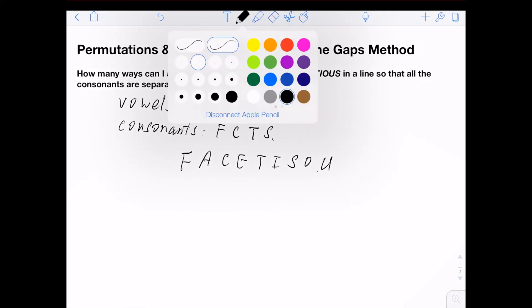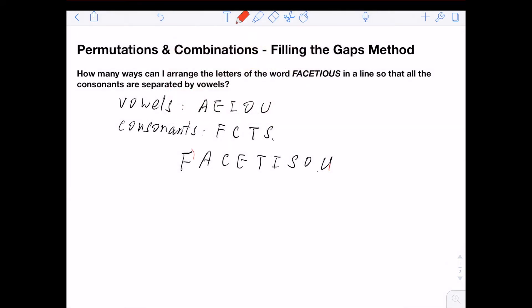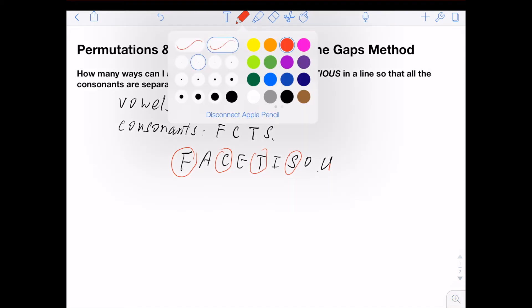You can see all the consonants are separated by the vowels. That's consonant, that's consonant, and that's consonant, separated by the vowels here: A, E, I, O.